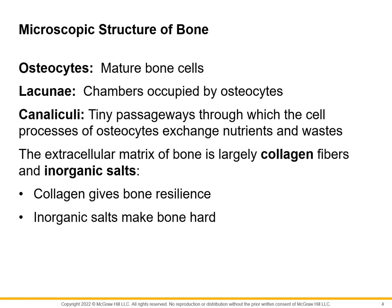Inside the bone we have mature bone cells called osteocytes. The suffix '-cyte' means mature cell. The prefix 'osteo' means bone, and 'chondro' means cartilage, so a chondrocyte is a cartilage cell and an osteocyte is a mature bone cell. We're going to see how the difference between a mature and immature bone cell works when we look at other cells that build bone.